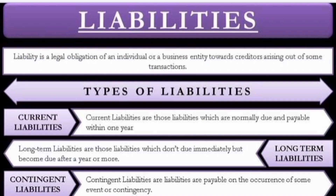The next important term is liabilities. Liabilities means a legal obligation of an individual or a business entity towards creditors, arising out of some transactions. Types of liabilities include current liabilities, long-term liabilities, and contingent liabilities. Current liabilities are those which are normally due and payable within one year. Long-term liabilities are those which don't become due immediately but become due after a year or more. Contingent liabilities are liabilities that are payable on the occurrence of some event or contingency.